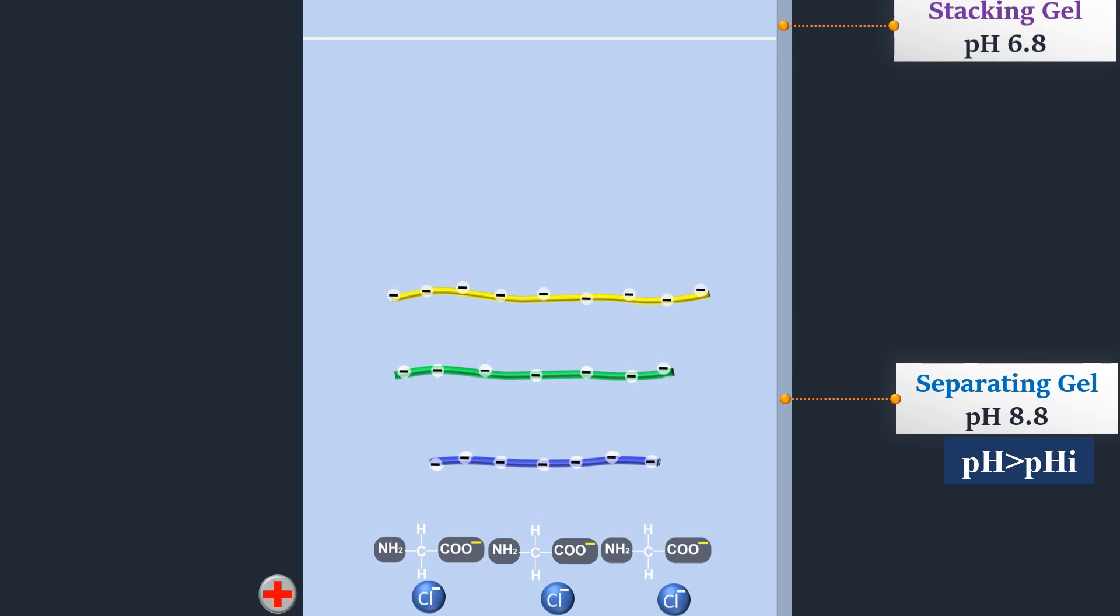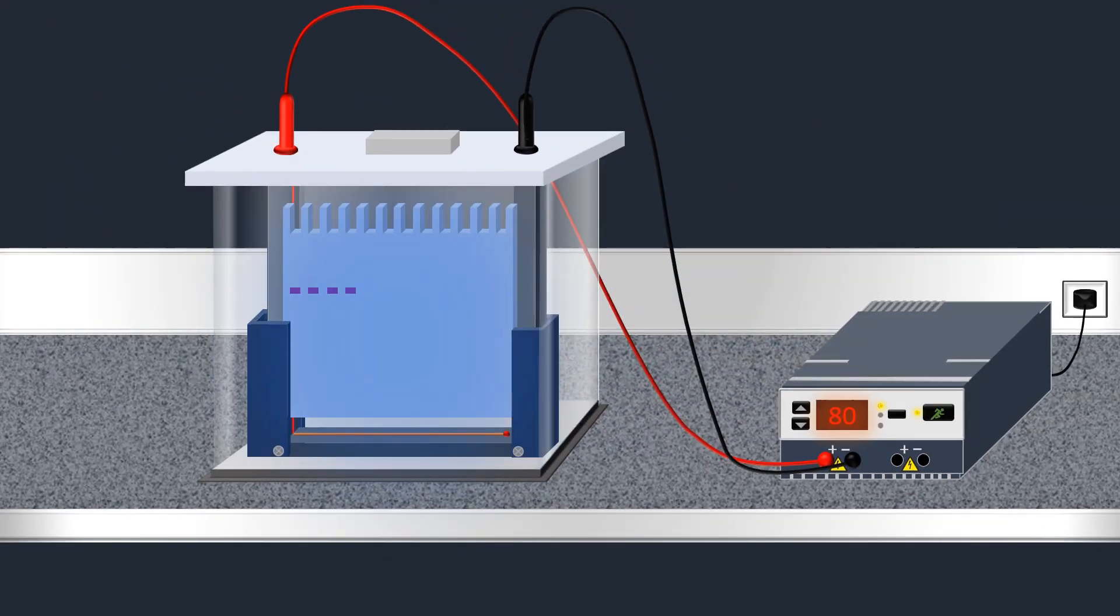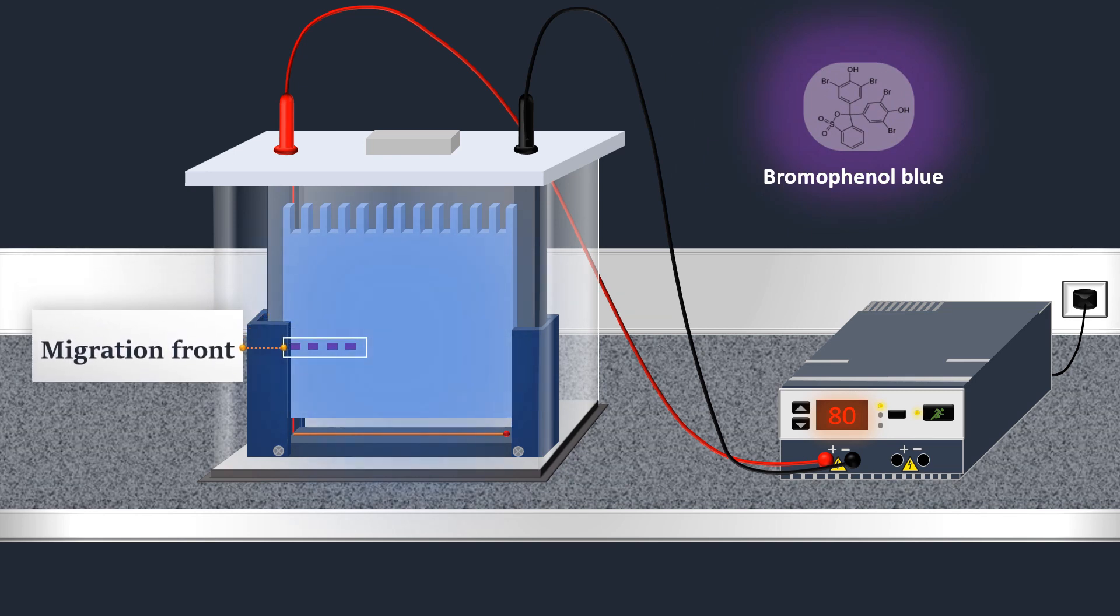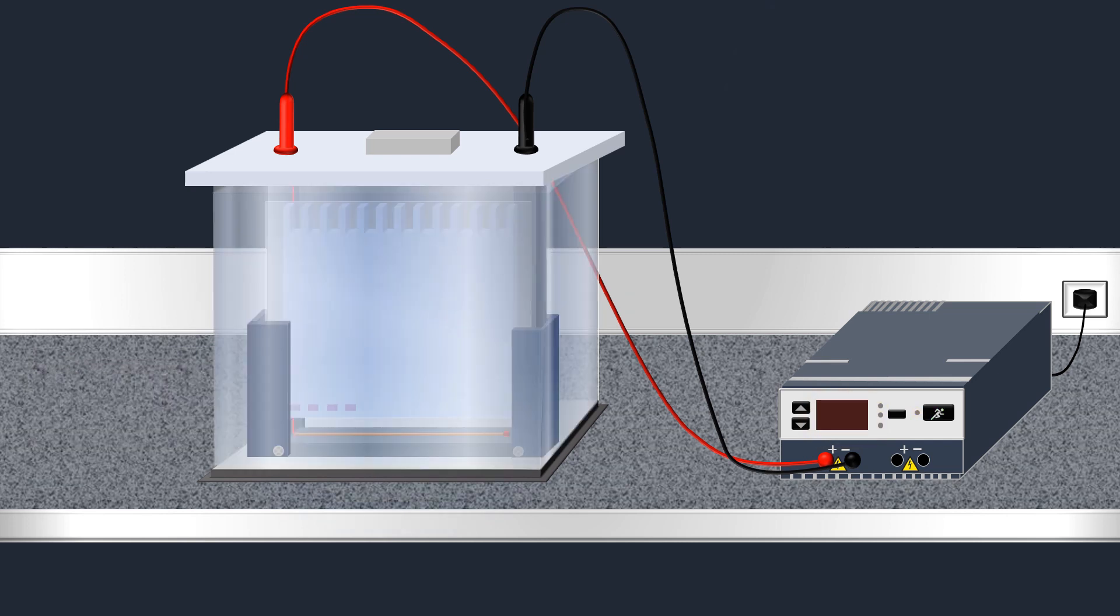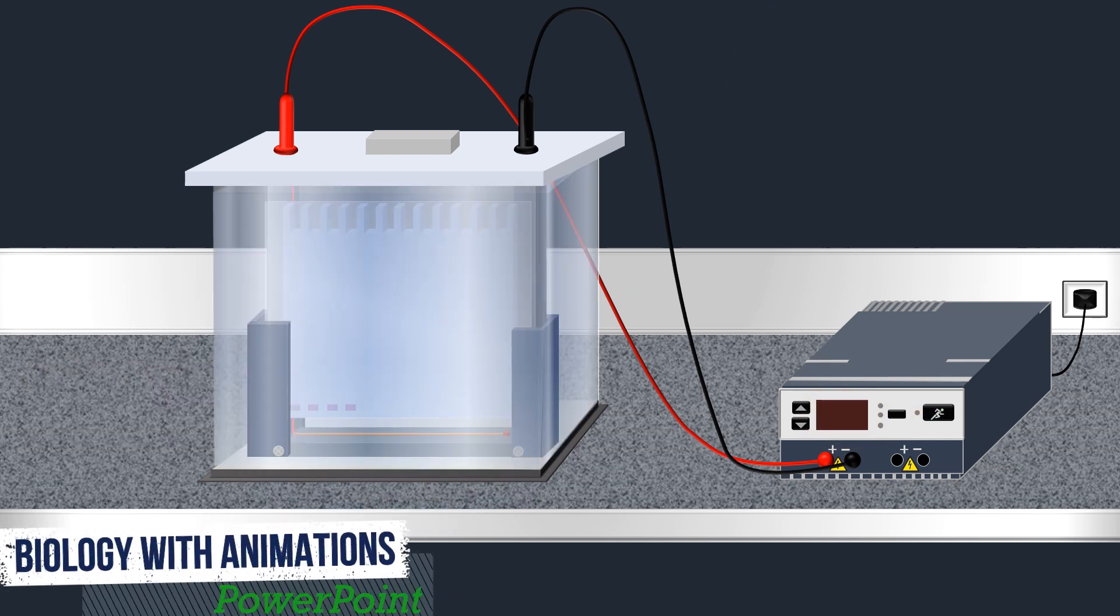Due to the relatively small molecule size of bromophenol blue, it migrates faster than proteins. By optical control of the migrating colored band, the electrophoresis can be stopped before the dye and before the samples have completely migrated through the gel and leave it.